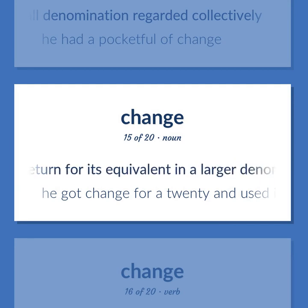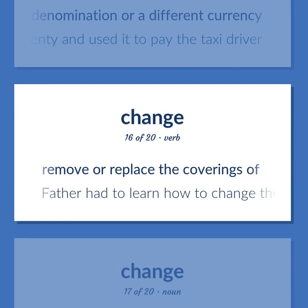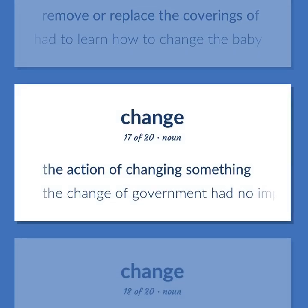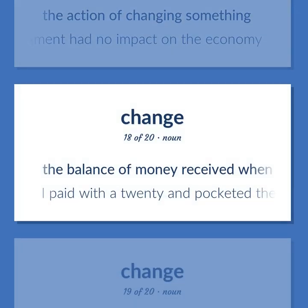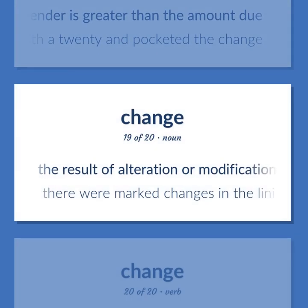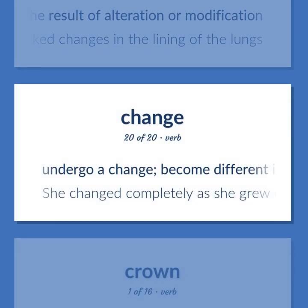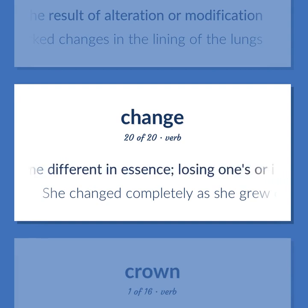Money received in return for its equivalent in a larger denomination or a different currency — he got change for a $20 and used it to pay the taxi driver. Remove or replace the coverings of — father had to learn how to change the baby. The action of changing something — the change of government had no impact on the economy. The balance of money received when the amount you tender is greater than the amount due — I paid with a $20 and pocketed the change. The result of alteration or modification — there were marked changes in the lining of the lungs. Undergo a change; become different in essence, losing one's or its original nature — she changed completely as she grew older.